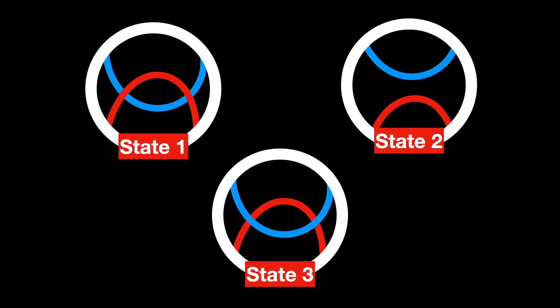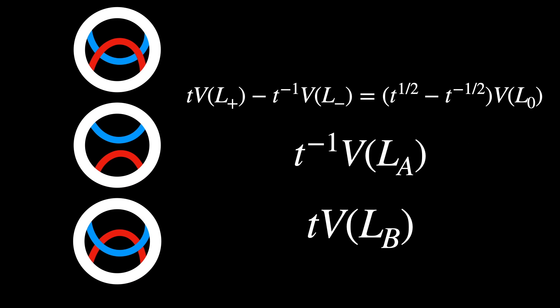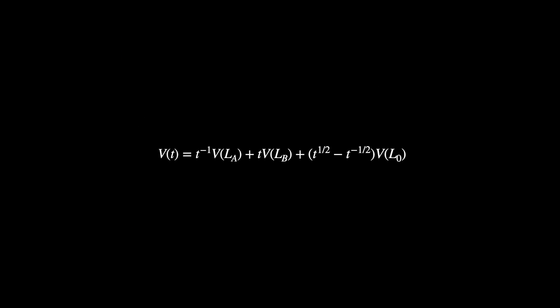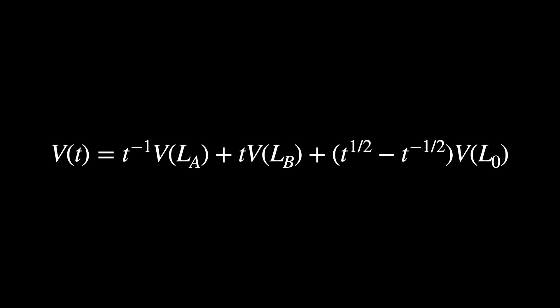Each state that you identified gets an algebraic expression assigned to it. This expression depends on the orientation of the crossing, whether the strand goes over or under, and from which direction. The final Jones polynomial is found by taking all these algebraic expressions from each state and combining them. It's interesting how it was developed along with topology and yet separately.